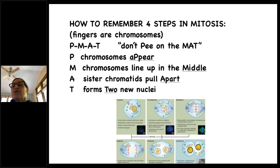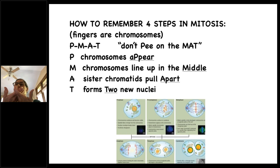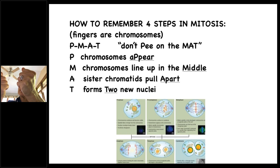The handy way to remember the main steps is PMAT: Prophase, Metaphase, Anaphase, and Telophase — remember it as 'don't P on the mat.' Using your fingers: P is where chromosomes become visible under a microscope; M is chromosomes lining up in the middle (metaphase); A is anaphase, where sister chromatids pull apart; T is telophase, where two new nuclei form. Then boom — cytokinesis, the last phase, where the nuclei break apart and you end up with two new cells.